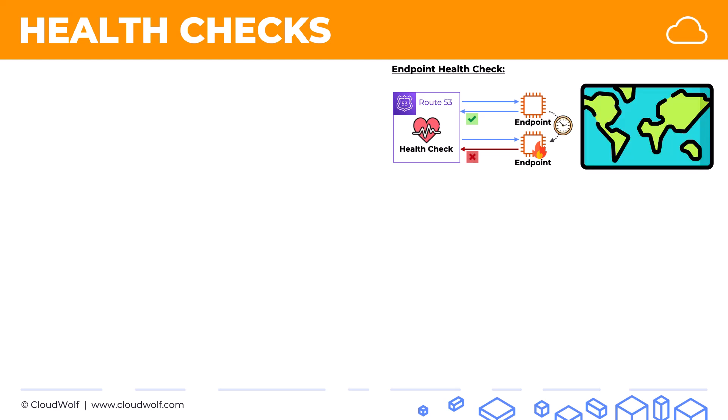How does that happen? In the background, you have all these checkers around the world. They are the ones monitoring — they're sending HTTP or HTTPS requests, or you can set up TCP-only requests to this endpoint. They're doing so roughly every 30 seconds, and for each health check, there will be 15 checkers assigned. So you have 15 checkers sending requests every 30 seconds, and they're not coordinated in terms of their time, so it kind of comes at random overall.